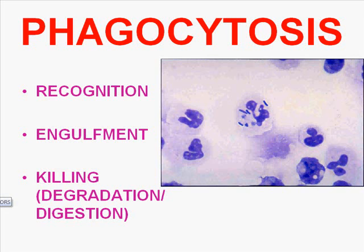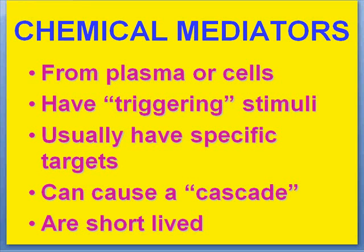Up until now we've had a fairly linear description of the process. We are now going to enter a relatively less logical phase when we talk about chemical mediators — and there's a whole bunch of them. Rather than memorizing all the different ones, let's talk about what they all do in general. First of all, they are substances — generally proteins. They are released from either the plasma or cells, and they have triggering stimuli which cause them to be released.